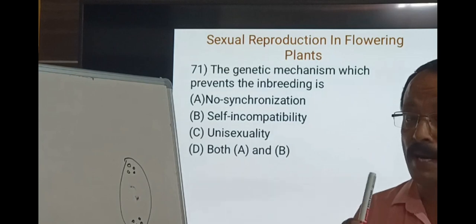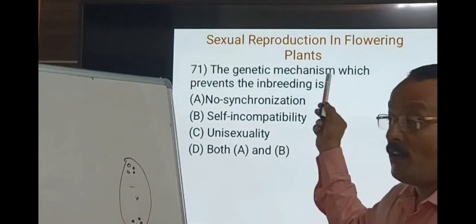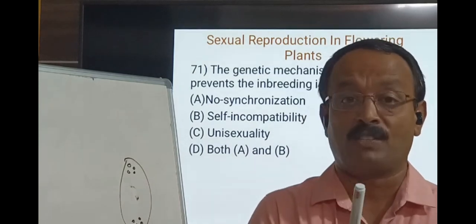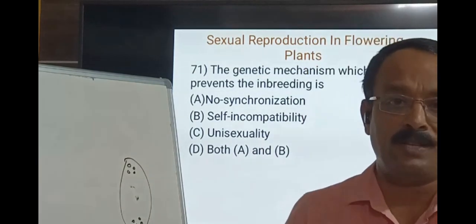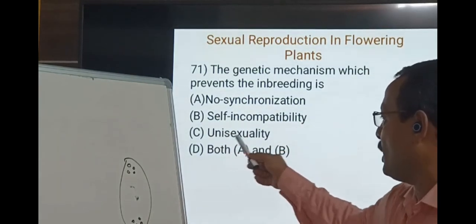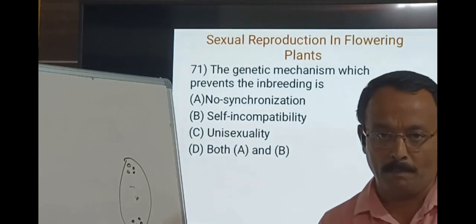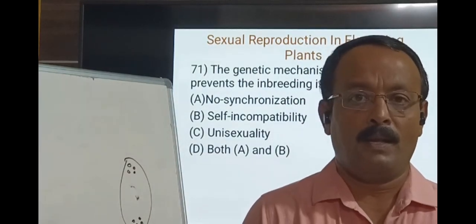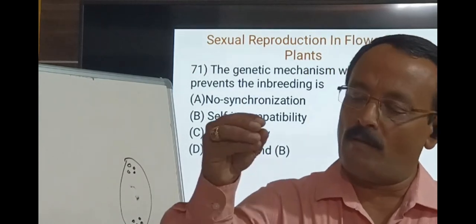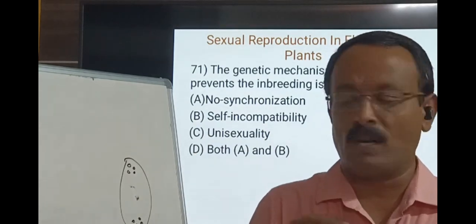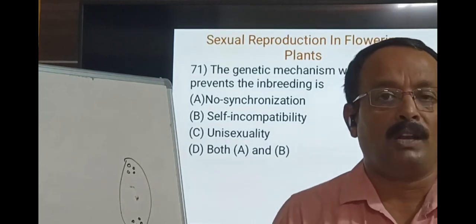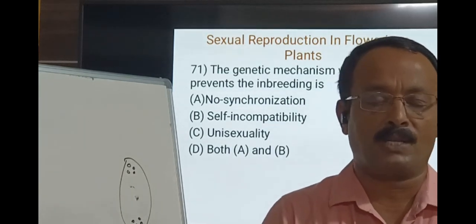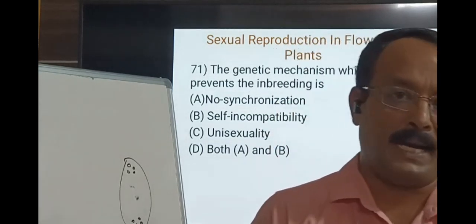The genetic mechanism which prevents inbreeding — and the question specifically says genetic mechanism — is self-incompatibility. Non-synchronization, unisexuality, and self-incompatibility are options, but we have to answer self-incompatibility. In several plants, flowers are modified such that if the pollen of the same flower lands on the stigma, due to a certain genetic mechanism these pollen will not germinate on the stigma, thus preventing self-pollination. This outbreeding device is called self-incompatibility.